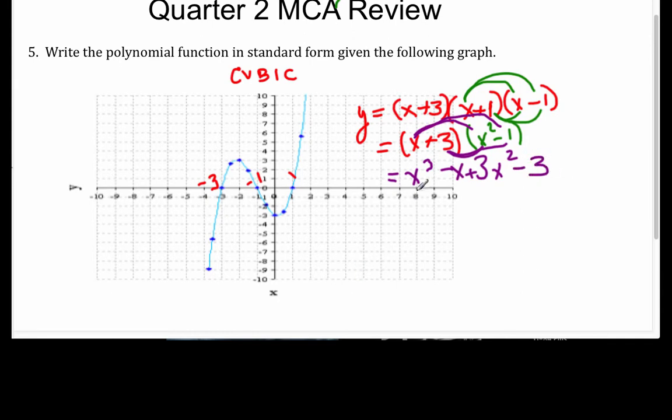Alright, so my question to you is, am I done? Look up here, right? I have to write this in standard form. That's not in standard form. I'm not in the right order. So y is equal to x cubed. I have to write in descending order of my degrees of each monomial. So I have the cubed. Now I need the squared term, so plus 3x squared. Now I need the x minus x, and then the constant at the end minus 3.